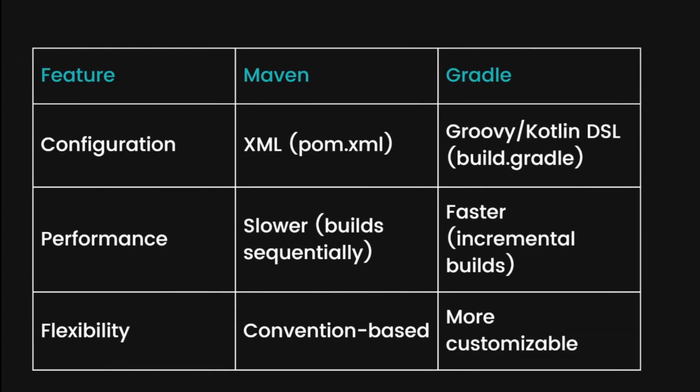In terms of features, the configuration of Maven is dependent on the pom.xml file. Configuration means the set of rules and instructions for building or running your application. In Maven, those instructions are in the pom.xml file, while in Gradle, they are in the build.gradle file. When it comes to performance, Maven is slower compared to Gradle. In terms of flexibility, Maven is convention-based while Gradle is more customizable.